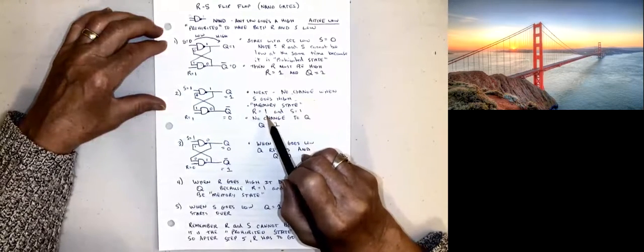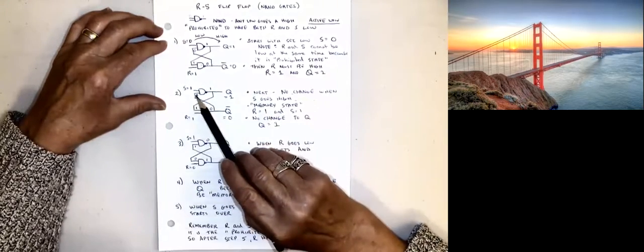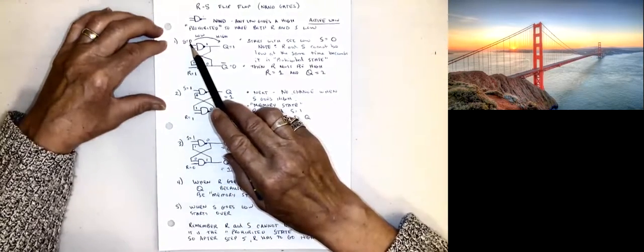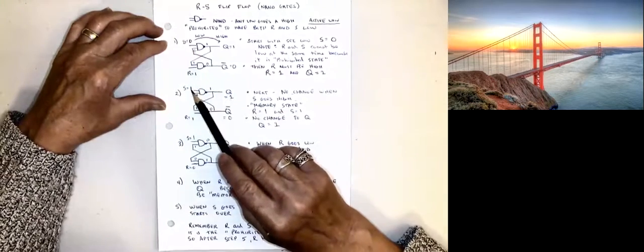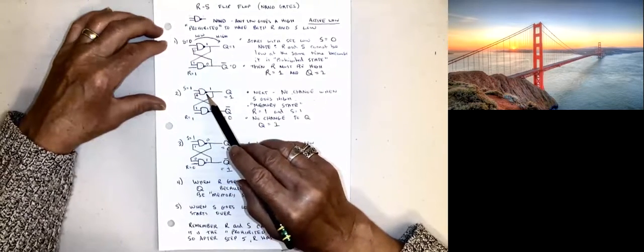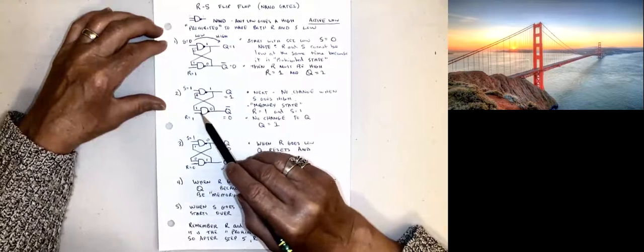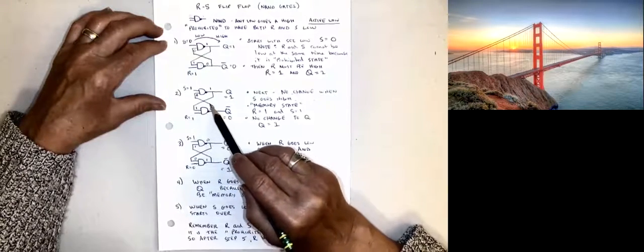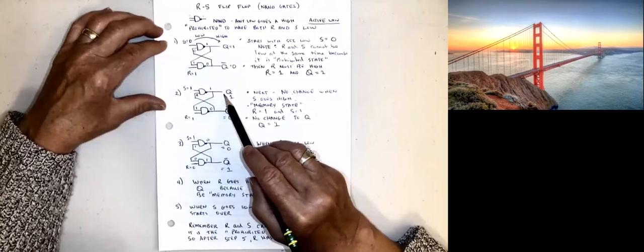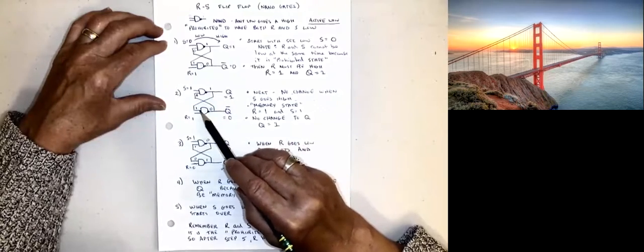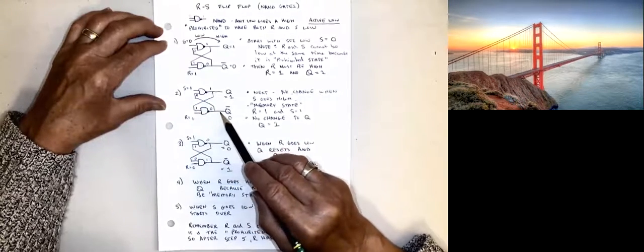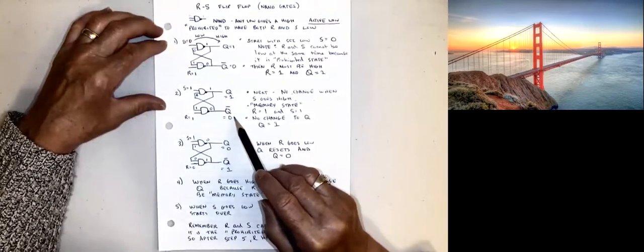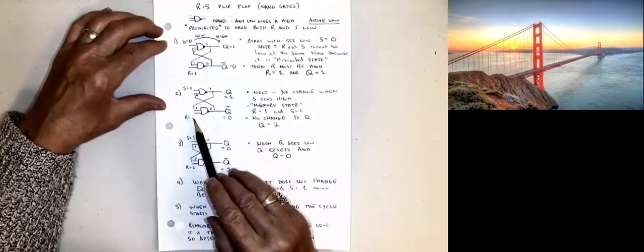To go to memory state for a NAND gate, both S and R would be in a high condition and there would be no change to Q. In this case we went from a low to a high, and we had a low coming back — any low gives us a high, so Q stays the same. We end up with two highs down here, and that still gives us NOT Q as a low. So that's the memory state when S equals 1 and R equals 1.